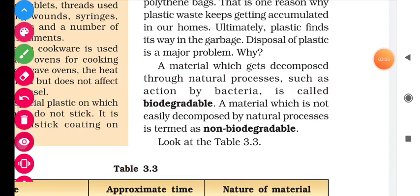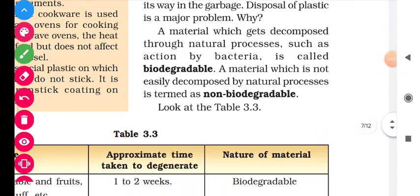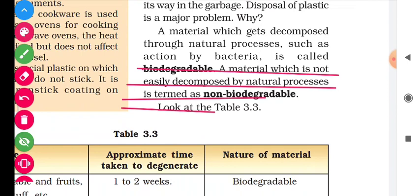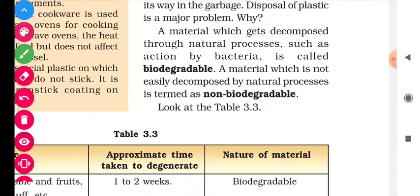And the material which is not easily decomposed by natural process is termed as non-biodegradable. So these are the two definitions of the two types of substances: first is biodegradable, and second is non-biodegradable.